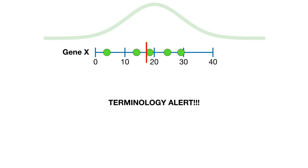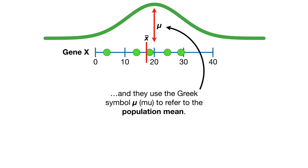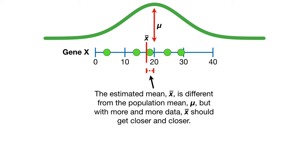It's the dreaded terminology alert! Statisticians often use the symbol X-bar to refer to the estimated mean, which is also called the sample mean. And they use the Greek symbol mu to refer to the population mean. The estimated mean, X-bar, is different from the population mean, mu, but with more and more data, X-bar should get closer and closer.